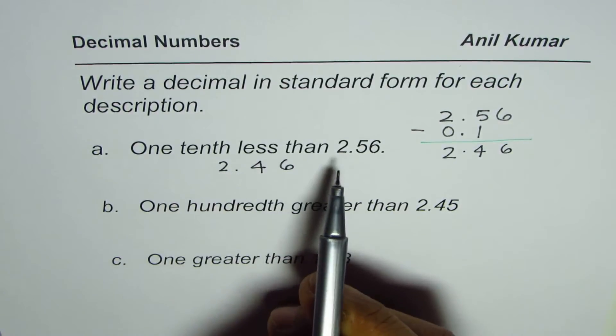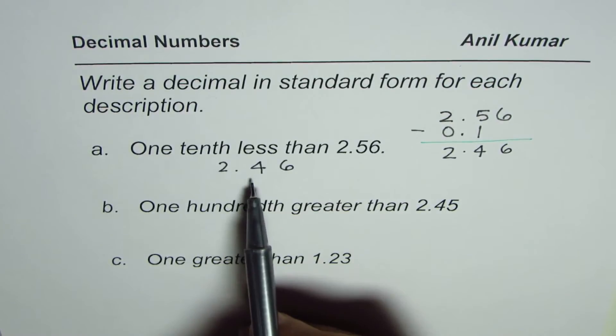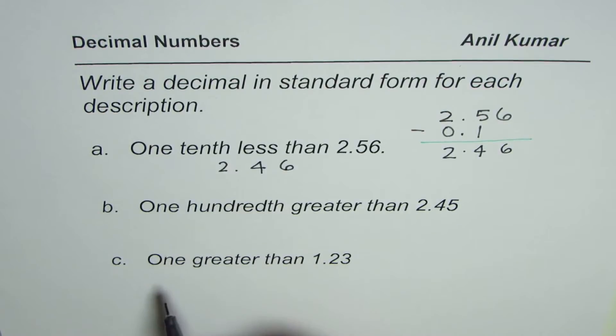So you can read this as 2 and 56 hundredths. This is 2 and 46 hundredths, one tenth less. This is the tenths position. Now with this concept I hope you can get the next one.